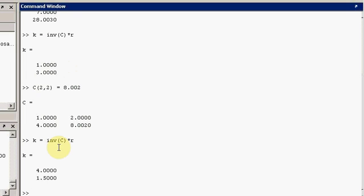And you see here, there's a significant difference. The value for K1 has changed from one to four, and the value for K2 has gone from three to 1.5. So there has been a very rapid change in that solution, and that was from a very small change in the matrix C.